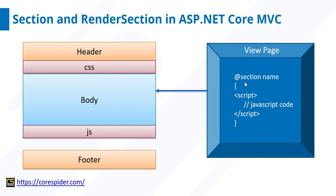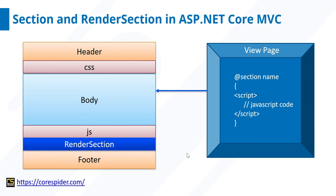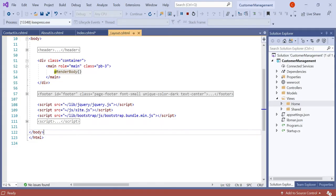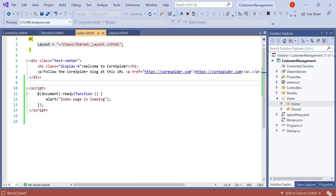As mentioned, section is symbolized by the @section directive. We'll add the render section below the JS part in the layout, and the render section name is defined on the view page. Simply put, if we place the dependent code below the jQuery file, we resolve this issue. In layout.cshtml, after the JS files load, we add @RenderSection, and in index.cshtml we add @section with the matching name — it should work.